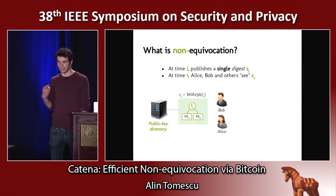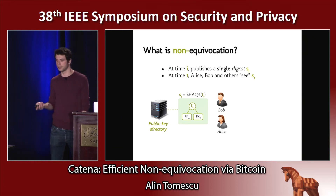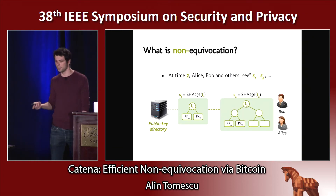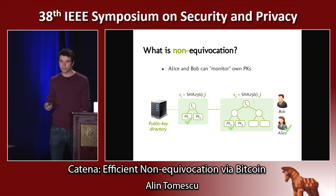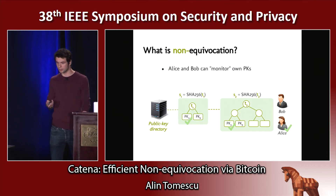For instance, at time one, Bob and Alice see the same directory s1. And when the directory is updated at time two, Alice and Bob and others will see the same history of digests s1 and s2. This is good because Alice and Bob can monitor their own public keys and detect impersonation. Alice checks, she's okay; Bob checks, he's okay.